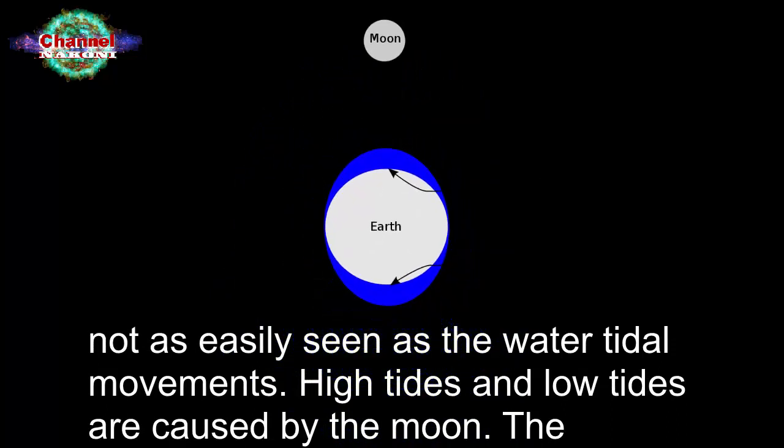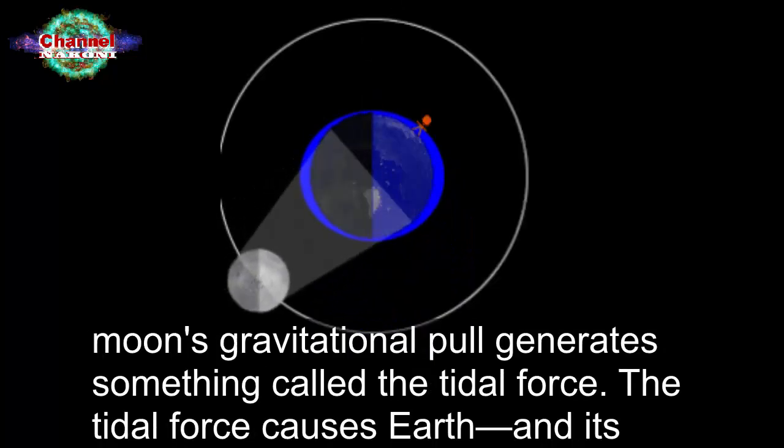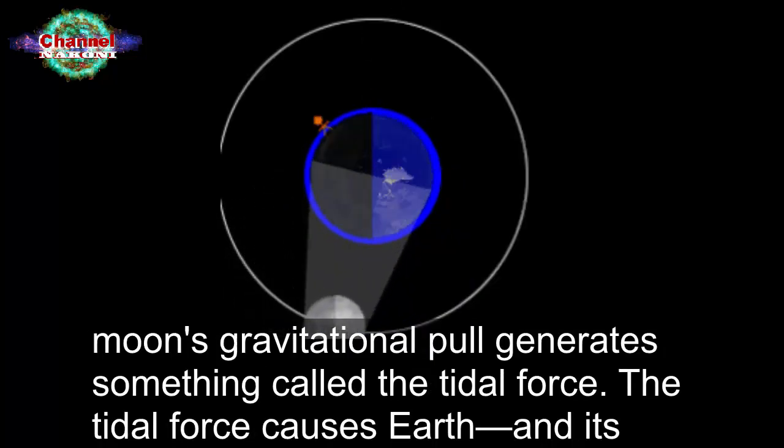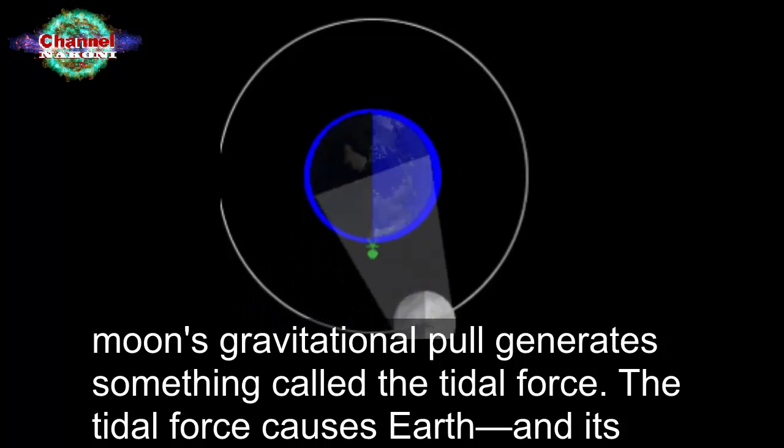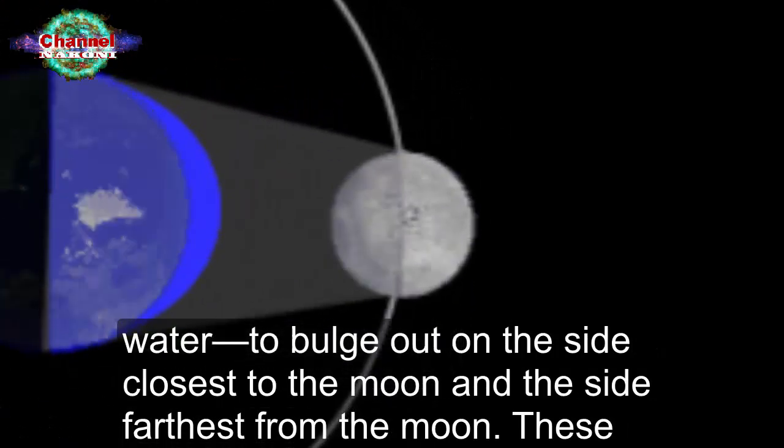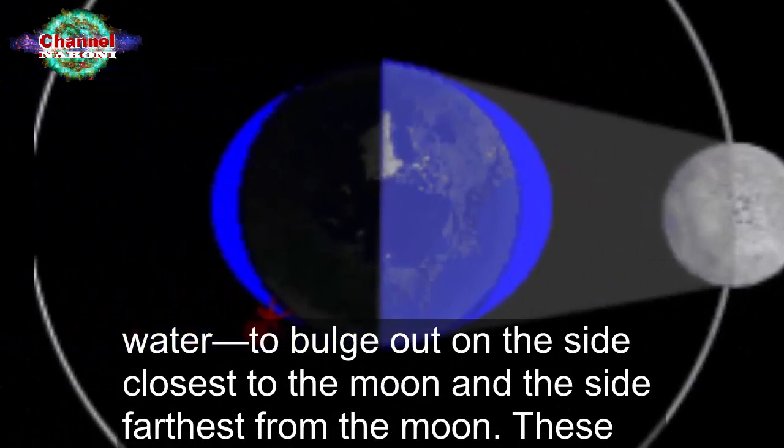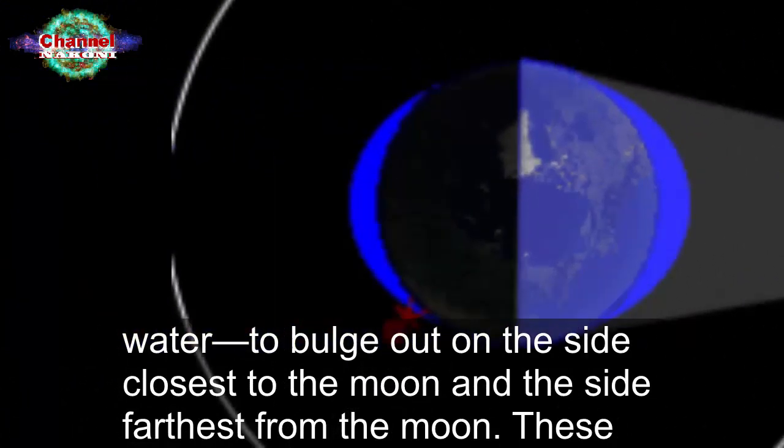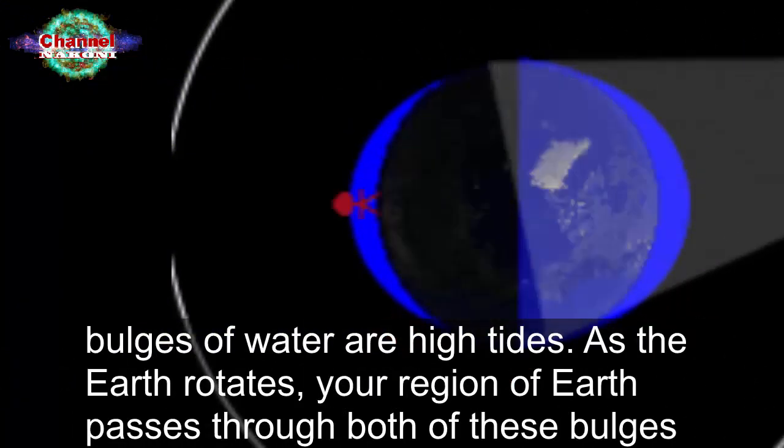High tides and low tides are caused by the moon. The moon's gravitational pull generates something called the tidal force. The tidal force causes earth and its water to bulge out on the side closest to the moon and the side farthest from the moon. These bulges of water are high tides.